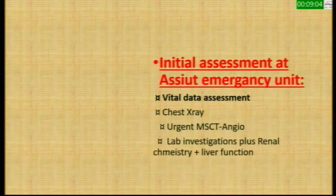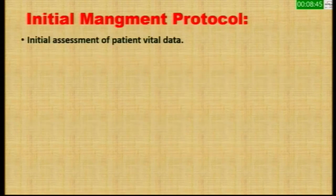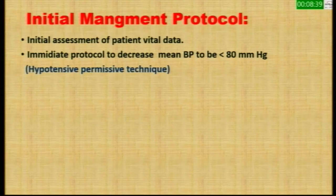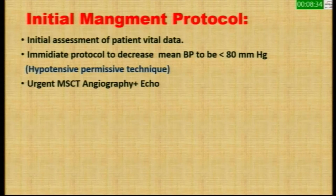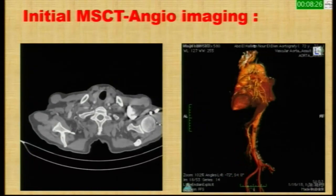Immediate assessment at ER: vital data showed the patient was hypotensive with blood pressure 80 over 50. Urgent chest X-ray revealed massive right hemothorax. Urgent multi-slice CT revealed contained rupture with dissecting thoracic aneurysm. Renal and liver function were normal. Our initial protocol was assessment of vital data, then immediate hypotensive perfusion technique to avoid more bleeding, followed by urgent multi-slice CT to assess TEVAR possibility.